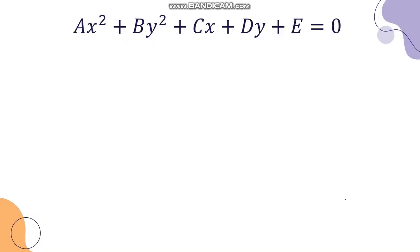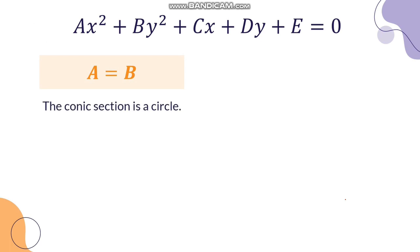Given the general equation, how will you know if it's a circle, parabola, hyperbola, or ellipse? You just have to look at the values of A and B, which are the coefficients of X squared and Y squared respectively. If A is equal to B, then the conic section is a circle.